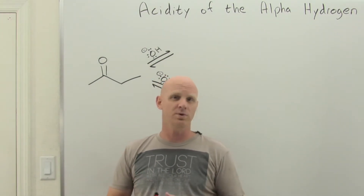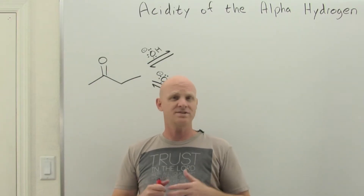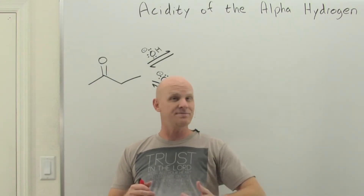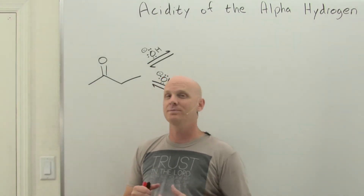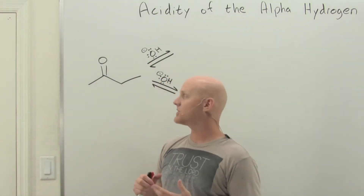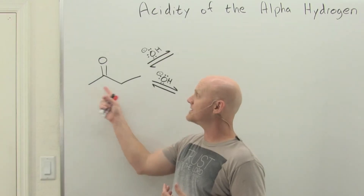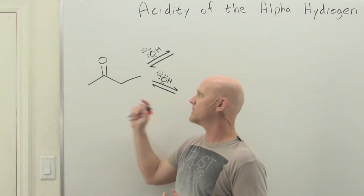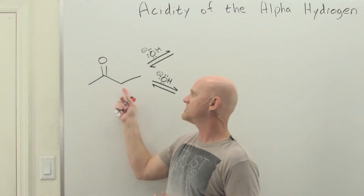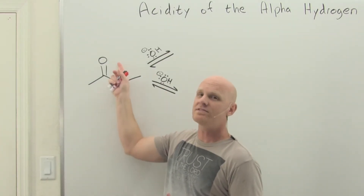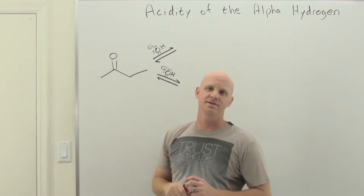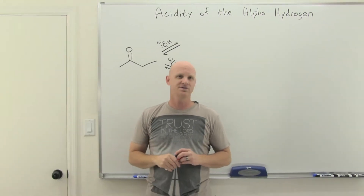Of particular importance in this chapter is the alpha carbon. We'll find out that those alpha hydrogens are going to be particularly acidic in comparison to the rest because the conjugate base anion is going to be resonance-stabilized with the oxygen.